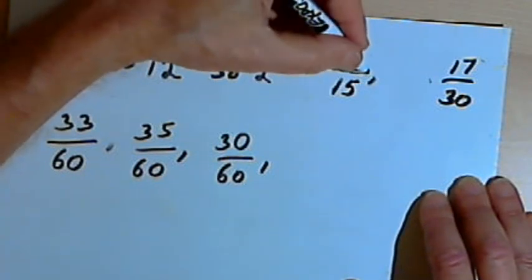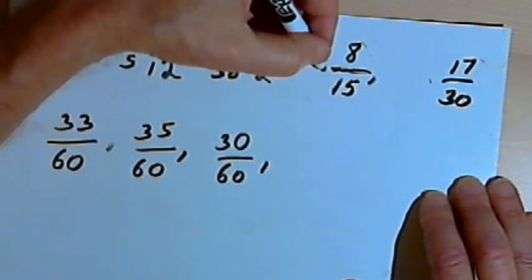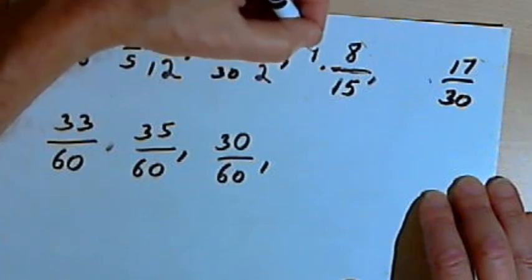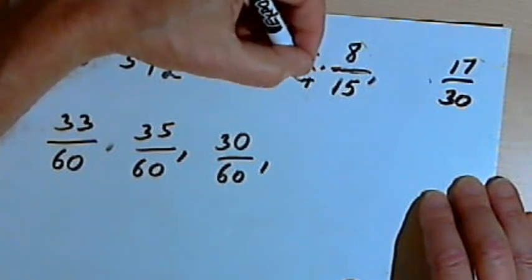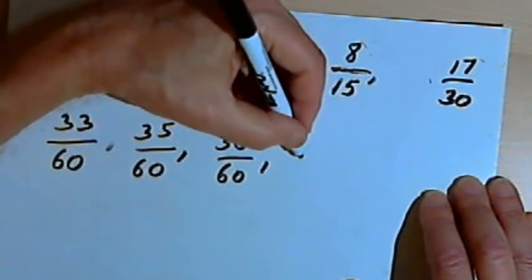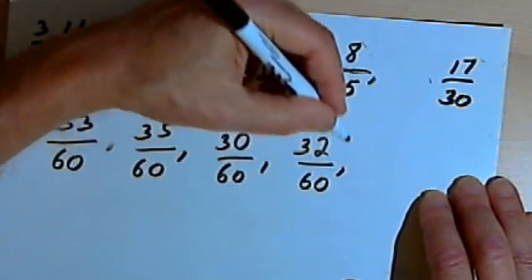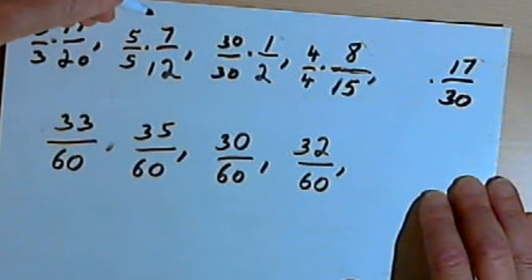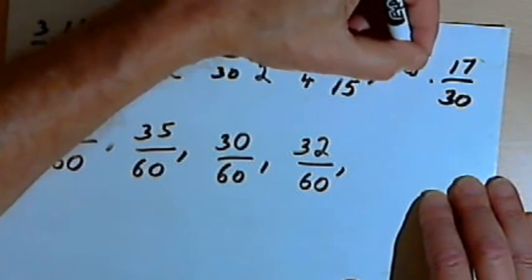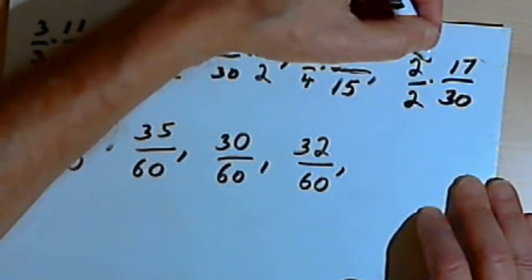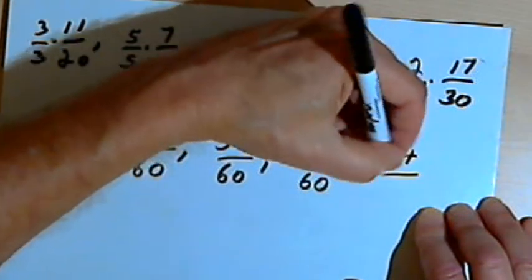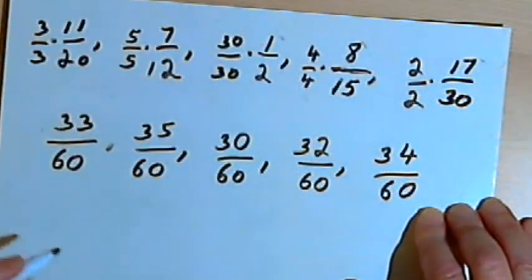For 8 over 15, I know that 4 times 15 is 60. So I'll multiply this by 4 over 4, and that will give me 32 over 60. And for 17 over 30, I'm going to have to multiply that by 2 over 2. And that will give me 34 over 60.